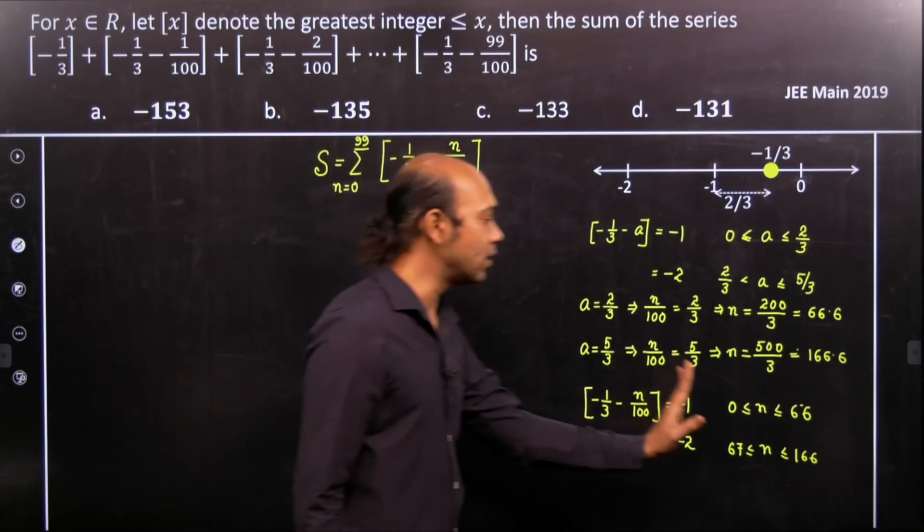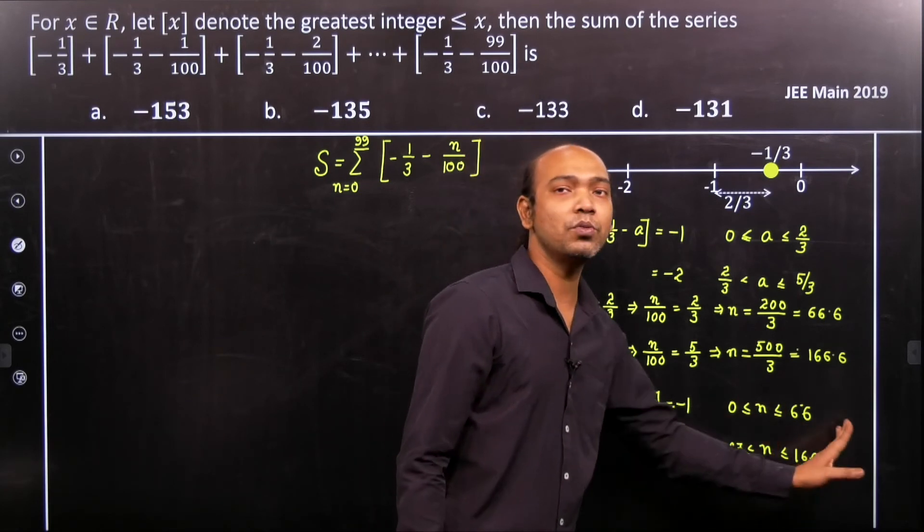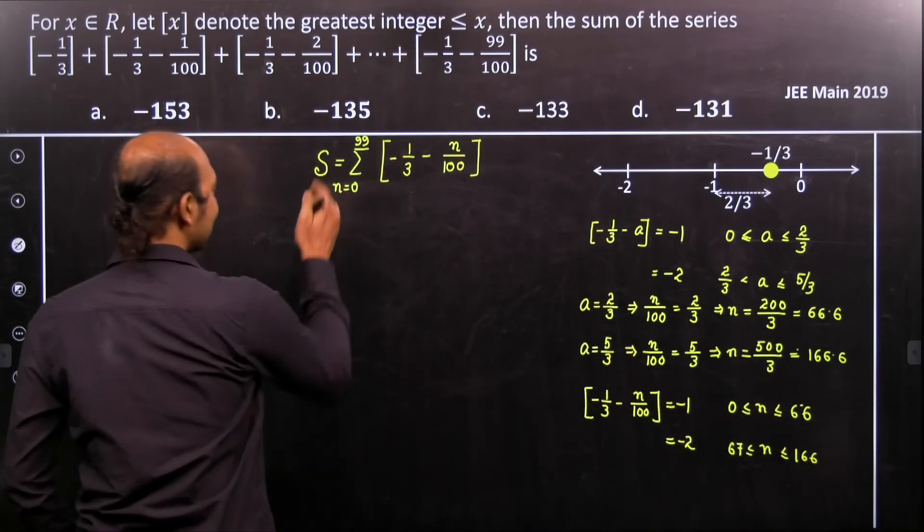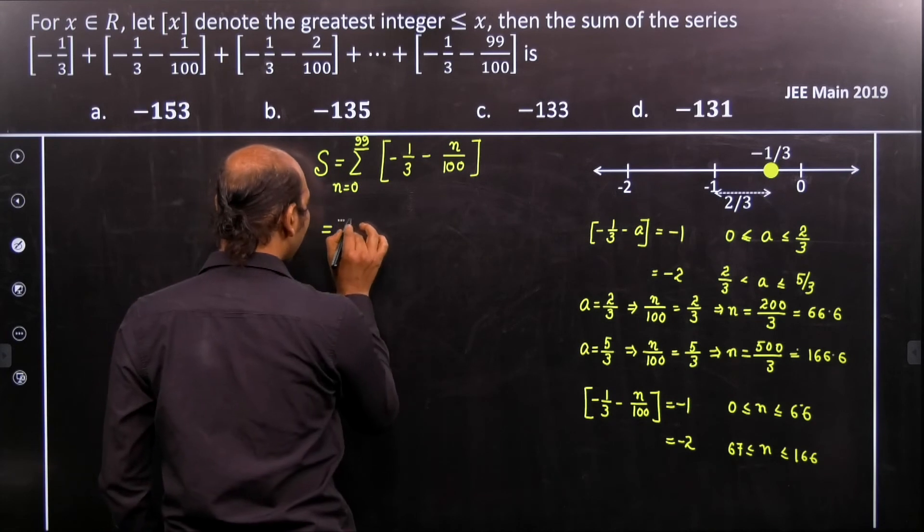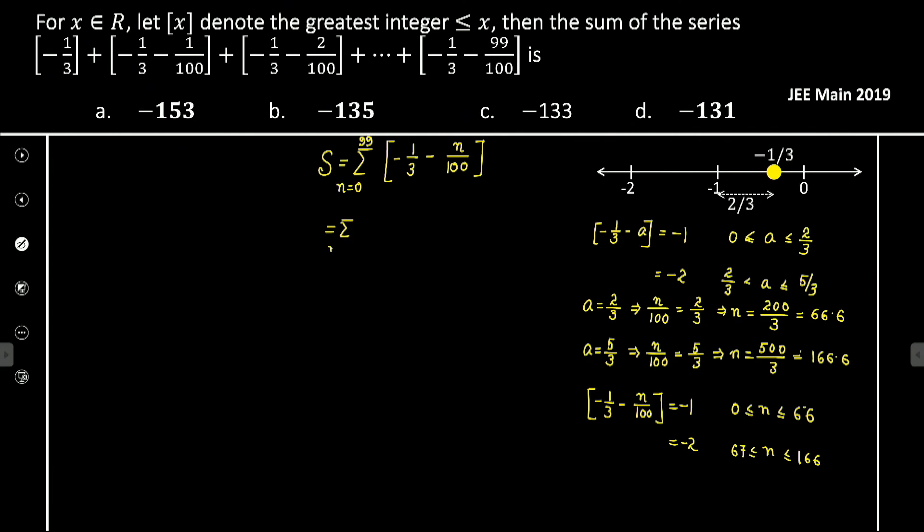So this summation we can apply: summation n equals 0 to 66 of minus 1 by 3 minus n by 100, plus summation 67 to 99...